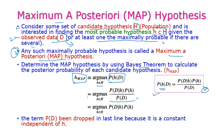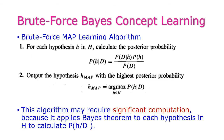Now we need to remove P(D) because it is independent of P(H) — it is a constant value. So we can remove this constant while finding H_MAP. This gives us our formula for H_MAP. Next, we will move to brute force Bayes concept learning.